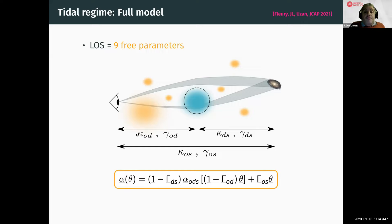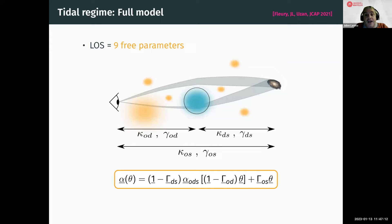I will not talk about convergence here, because convergence effects in strong lensing are degenerate with the overall mass of the main lens — this is known as the mass sheet degeneracy — and so they are not measurable quantities. However, what I want to demonstrate is that certain combinations of the shear caused by large-scale structures or halos distributed along the line of sight are measurable.